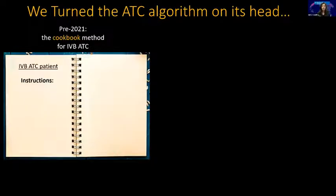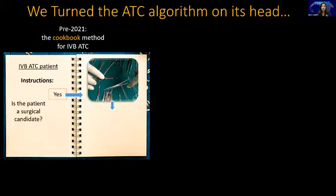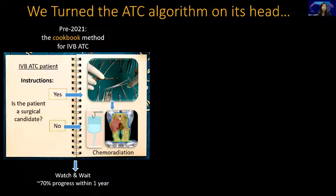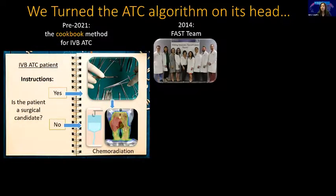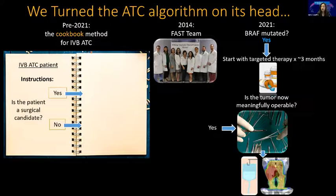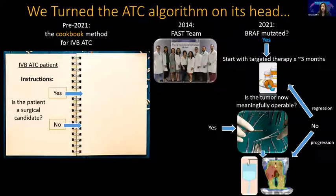We've turned the algorithm on its head. We used to have a cookbook for stage IVB patients: operable patients went to surgery then chemo-RT; inoperable patients went straight to chemo-RT. 70% would progress within the year. Now we give them targeted therapy first, and if they become operable, they go to surgery then chemo-RT. If not, they stay on targeted therapy, and if they progress, they can still go to radiation.